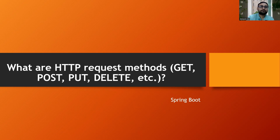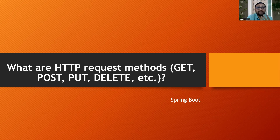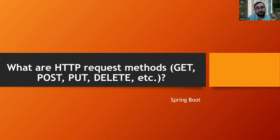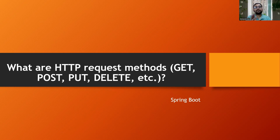The next set of questions covers HTTP request methods: GET, POST, PUT, PATCH, and DELETE. For GET, we use @GetMapping or @RequestMapping with method=GET to fetch data from the database. POST is for inserting data into the database. PUT is for updating an entire record. PATCH is for modifying specific columns — this is also an interview question: PUT versus PATCH, what's the difference? DELETE removes data from the database and typically returns nothing.